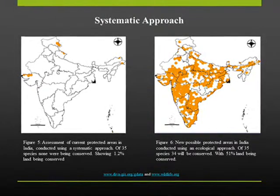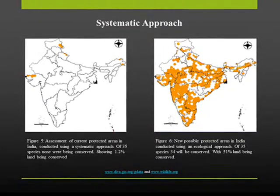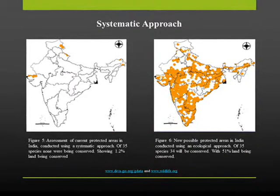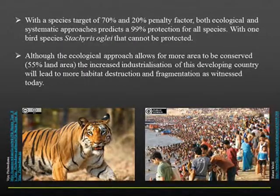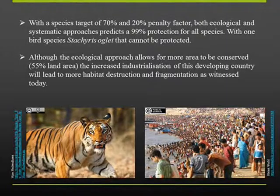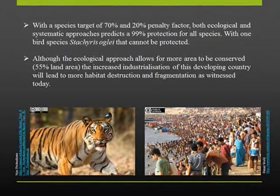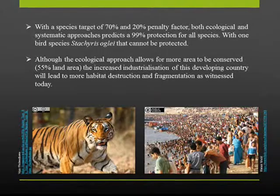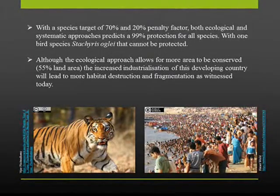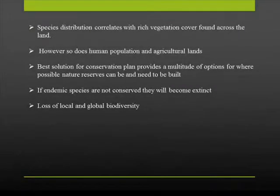Endemic species and human population distributions correlate with various ecoregions, where the highest or most dense populations are observed in densely vegetated forested areas. From the protected areas map, we see that these areas of most dense populations have very few or small protected areas. With increasing pressure from the growing human population, endemic species ranges grow smaller.